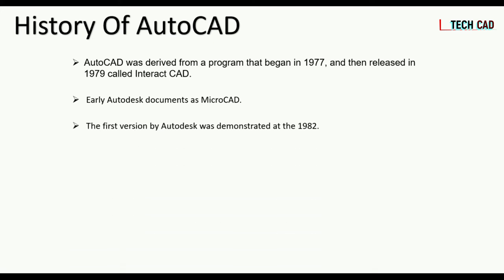The first version of Autodesk was demonstrated in 1982, which is the year Autodesk released it as a full-fledged version for 2D design and drafting. Before that, AutoCAD was named by version numbers. From 1982 to 1999, AutoCAD was released with numbered names, for example AutoCAD Release 13, Release 14, like that.